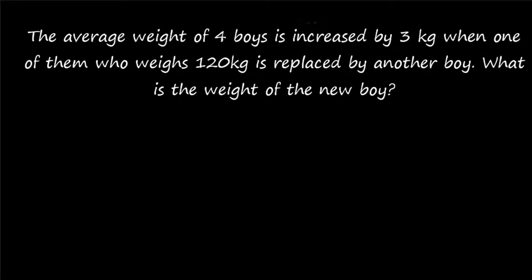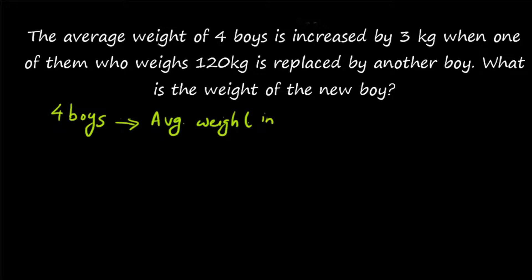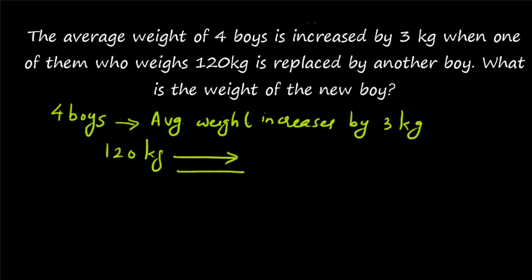There is a group of 4 boys and we don't know what is the average weight of the boys — it is not given. But the information given is: the average weight increases by 3 kg when one boy of 120 kg is replaced by another boy. So average weight increases by 3 kg. The 120 kg boy is going out and another boy with x kg is coming in.